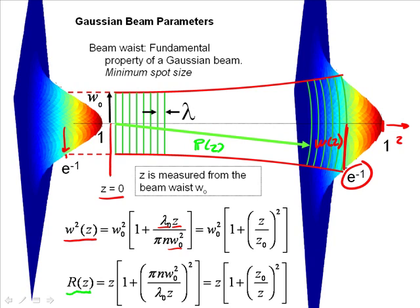In review: the position Z on the beam, the beam waist W naught, and the wavelength are the three fundamental parameters. We then define two more derived parameters: the waist as a function of position W(Z), and the radial phase as a function of position R(Z). These five parameters — or really the three fundamental ones, Z, W naught, and lambda — are all you need to define a Gaussian beam. We've gone from that convoluted derivation to just a couple of parameters that describe any beam.